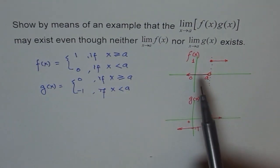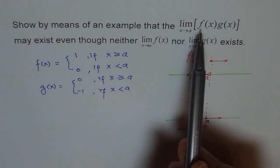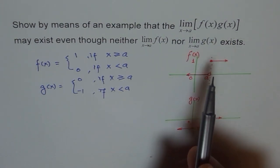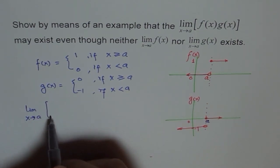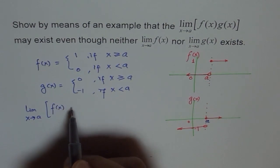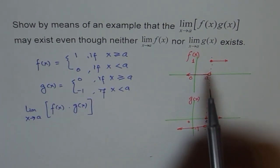So clearly, the limits of f(x) and g(x) do not exist. But how about the limit of f(x) times g(x)? Let's consider that limit: the limit of the function f(x) times g(x). Now, what happens to them?